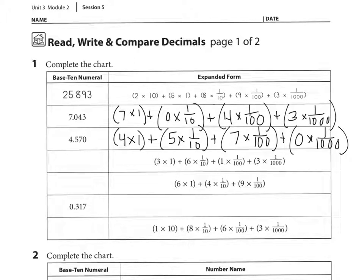So we have a 3 in the 1's place, a 6 in the 10th place, 1 in the 100ths, and 3 in the 1000ths. Next, we have 6 in the 1's place, 4 in the 10ths place, and 9 in the 100ths place. So we see 6, 4, and 9.